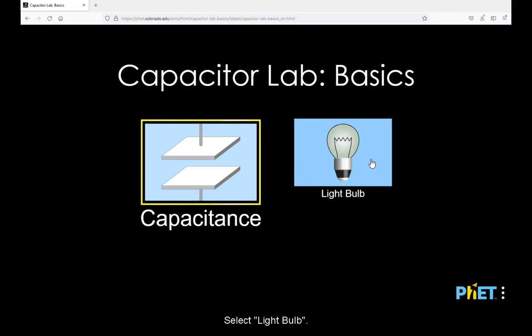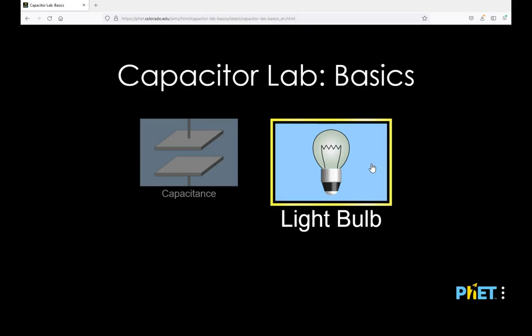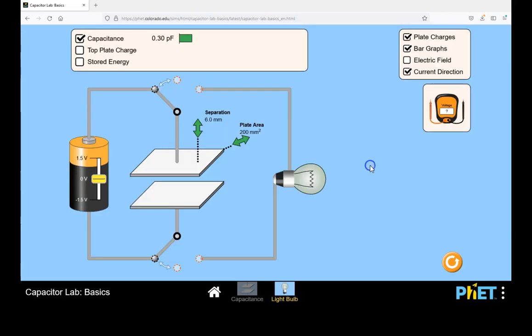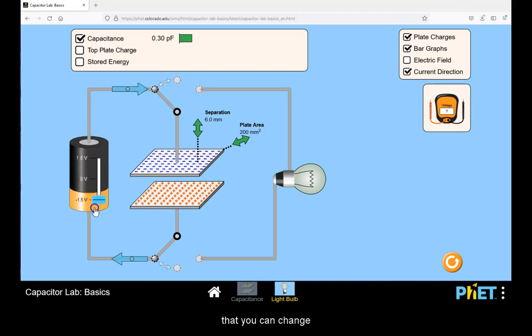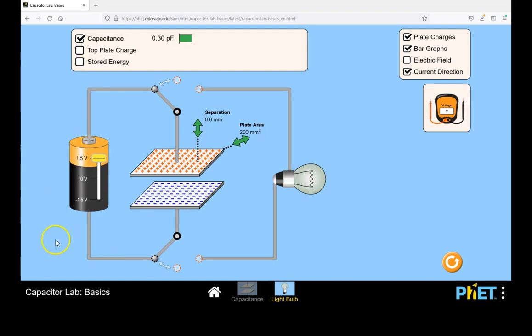Select Light Bulbs. You will have a battery that you can change the voltage to. It will be connected to a capacitor parallel plate that it will charge.